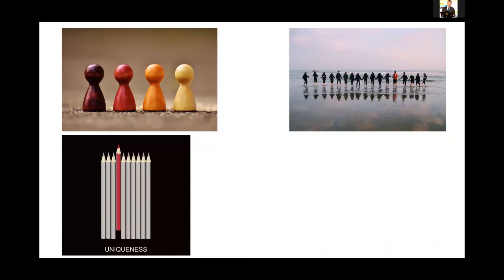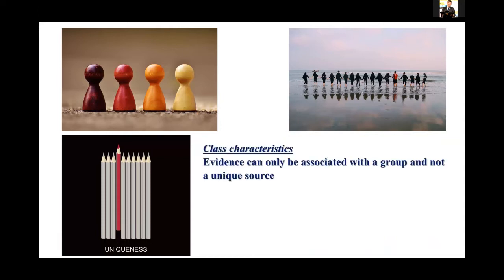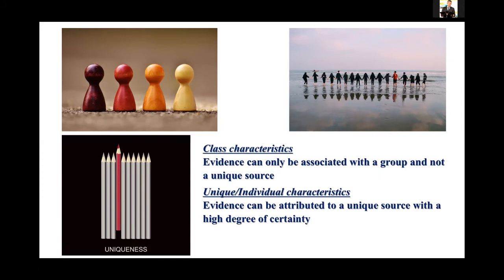If we talk about forensic analysis or forensic practice or forensic science, it's all about comparison. The basic fundamental thing about forensic science is that we explore some characteristics. First, we explore class characteristics — evidence that can only be associated with a group, which is not a unique source. Similarly, there exist individual or unique characteristics: evidence that can be attributed to a unique source with a high degree of certainty.